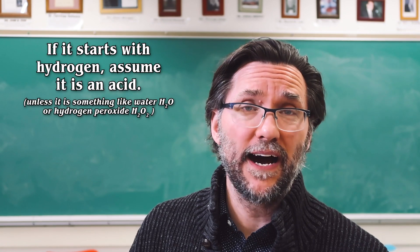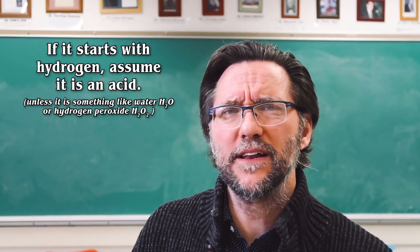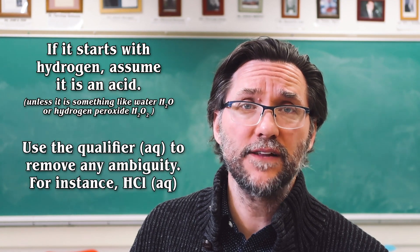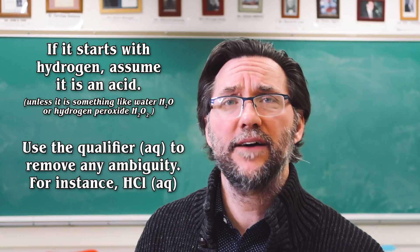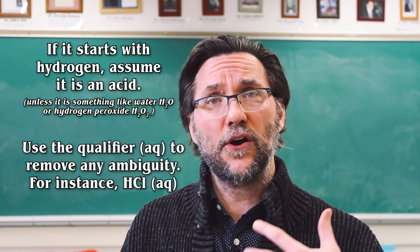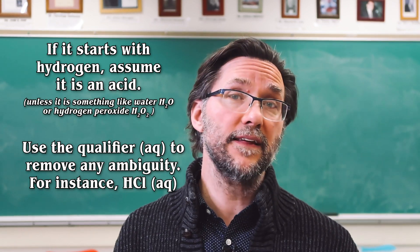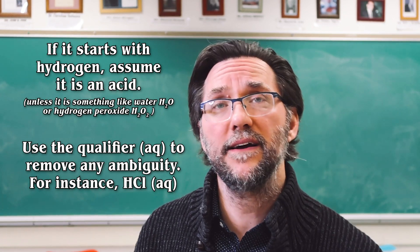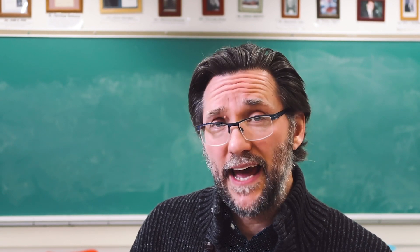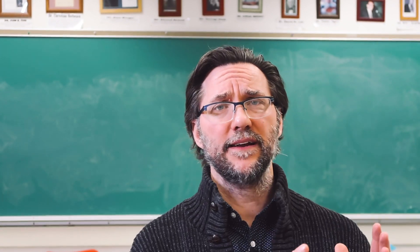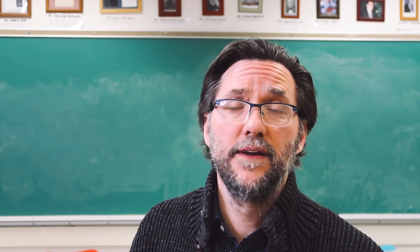Really anything that begins with a hydrogen at this level of chemistry, we can assume is an acid. And to remove any sort of uncertainty, we put (aq) after the acid. Because really, as Arrhenius defined an acid, an acid is simply anything that releases H+ ions in solution. So if the cation is always hydrogen, then really the only thing left is to figure out your anions. Either your anion contains oxygen or it doesn't.